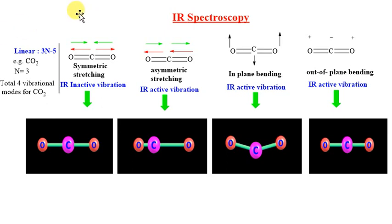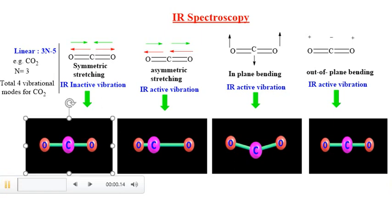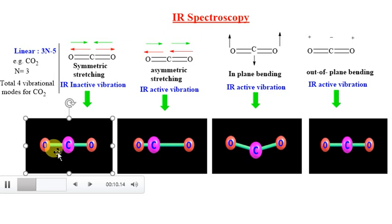The first example is CO2, a linear molecule. Applying the formula 3N minus 5, we get 4 different vibrations. The first vibration is symmetric stretching. In symmetric stretching there is no change in dipole moment, which is why this vibration is IR inactive.